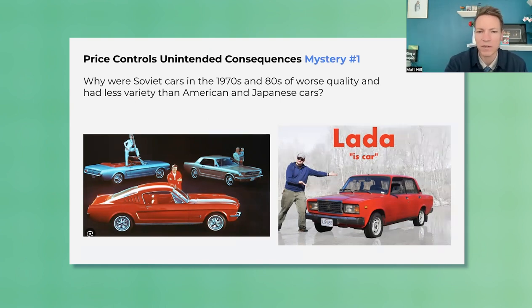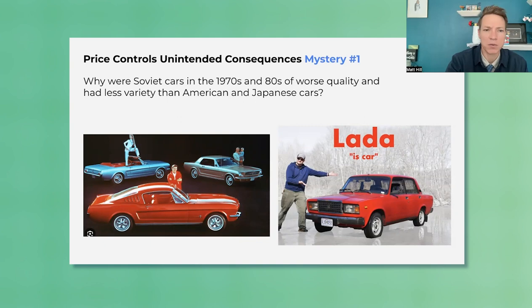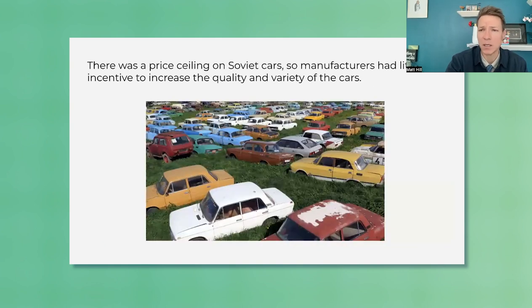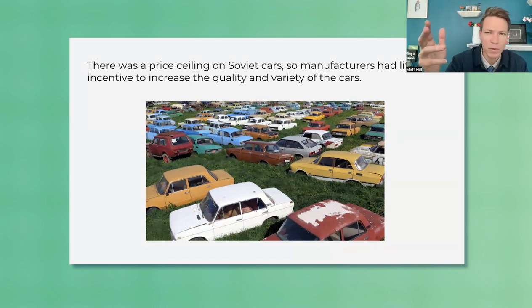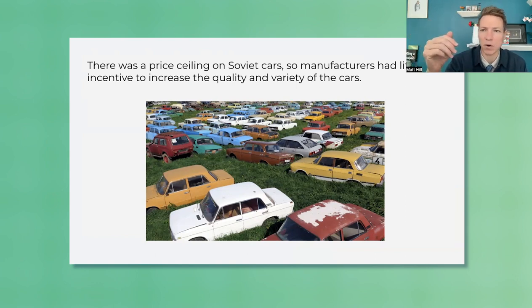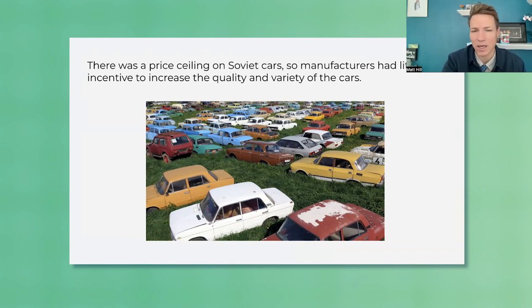So you go back to the 1960s and 1970s — here's a Ford Mustang, you can see all the different types. Soviets also had cars, but the cars were very basic, lower quality, lacked variety. Why were the Soviet cars so much worse, assuming similar levels of technology? The answer your students may be able to guess is a price ceiling. The price of Soviet cars couldn't go above a certain amount, so manufacturers had no incentive to make cool fast cars, convertibles, variety, higher quality. You can see this is like a junkyard filled with all these old Soviet cars that look the same.